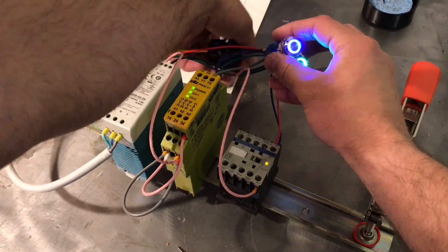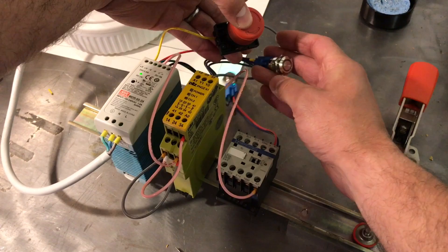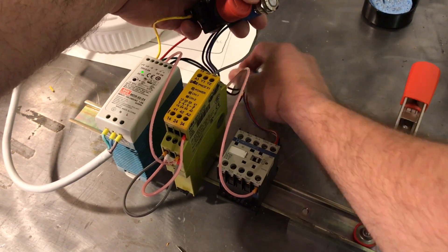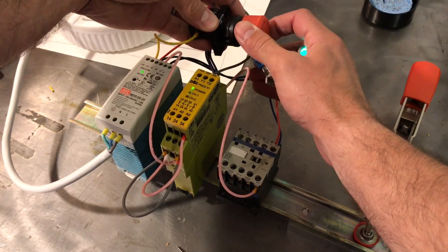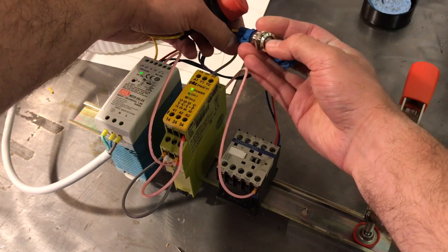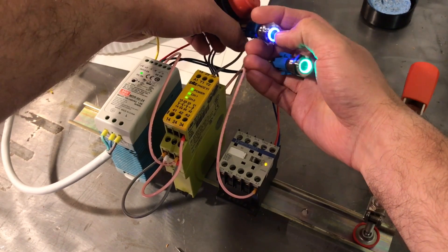When everything's on, if the e-stop is pressed, power's cut to everything. The light remains on here to say that if you reset this and press the reset button, the contactor will immediately come on. So that light being on is useful.